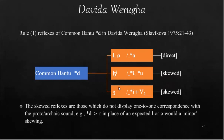Then we have an alveopalatal fricative found before E, the close vowel. These are called skewed reflexes because they are not one-to-one correspondence to the old sound. This is Slavikova's term. The alveopalatal is not considered here because it's the least common, and we haven't seen any instance of this reflex in any of the above examples.